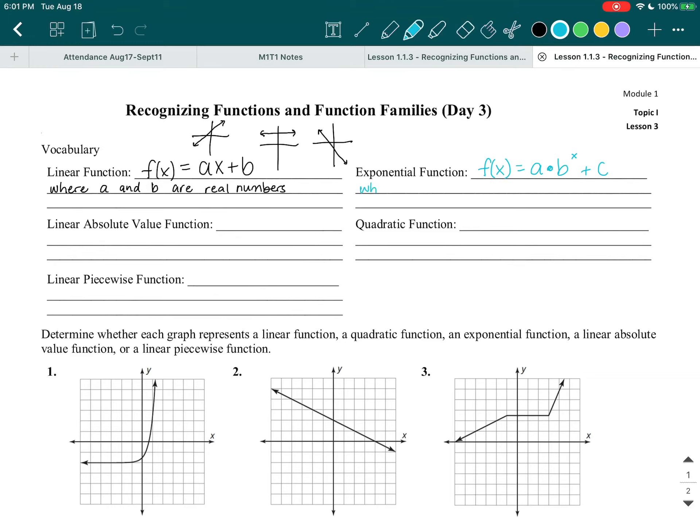And then plus c. And then this is where a, b, and c are, you guessed it, real numbers. And also, b is greater than 0, and b is not equal to 1.